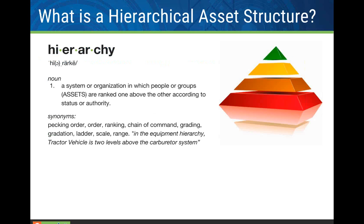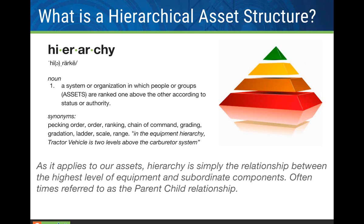Let's start with a simple definition. Right out of the dictionary: hierarchy is a system or organization in which people or groups are ranked one above the other according to status. Think about those groups as assets — a tractor vehicle is potentially two levels above the carburetor system. It's just a matter of how we organize our assets. Hierarchy is simply the relationship between the highest level of equipment and subordinate components. This is often referred to as the parent-child relationship.